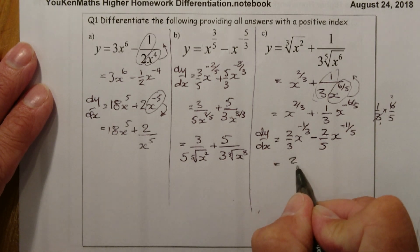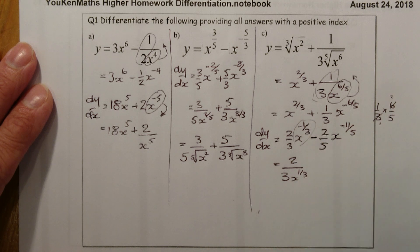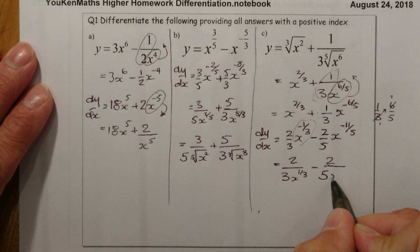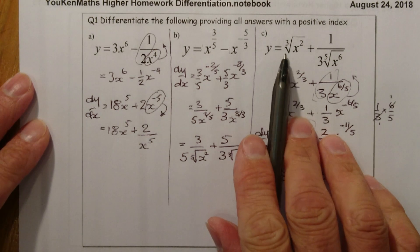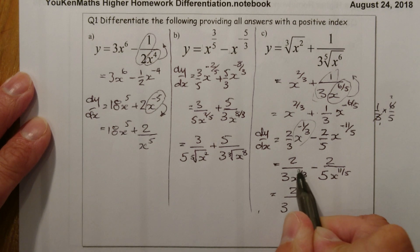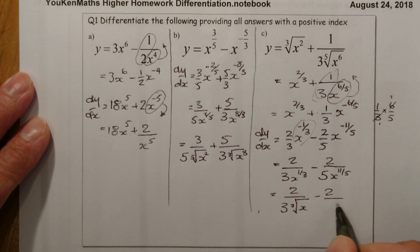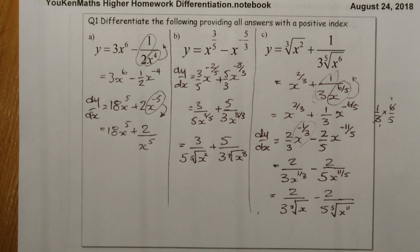Writing with a positive index: two-thirds over x to the one-third — just taking that part to the bottom — minus 2 over 5, with x to the 11 over 5 positive in the denominator. If it was given in root form and it's nicer to rewrite back: that's the cube root of x for the first part, and minus two-fifths times the fifth root of x to the 11 for the second.